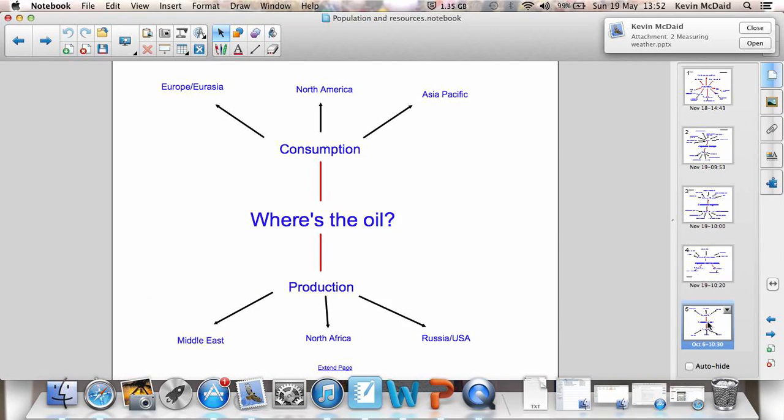Oil is the key example of a resource that we use. It's very important because we use it for so many things. Most of it is consumed in Europe, North America, Asia Pacific, countries like Australia, for instance. Most of it is produced in the Middle East, Saudi Arabia, Dubai, places like that, North Africa and Russia and the USA.